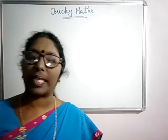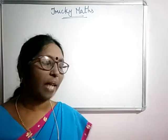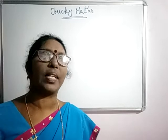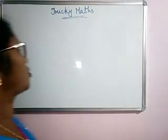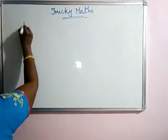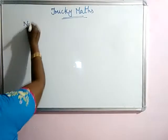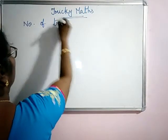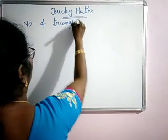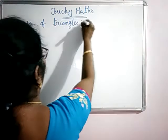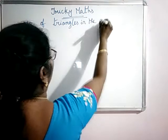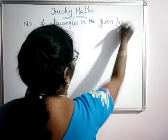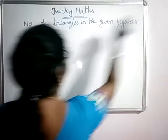If a square is divided into different triangles, how many triangles are there in that given square? How to calculate the number of triangles in the given figure?